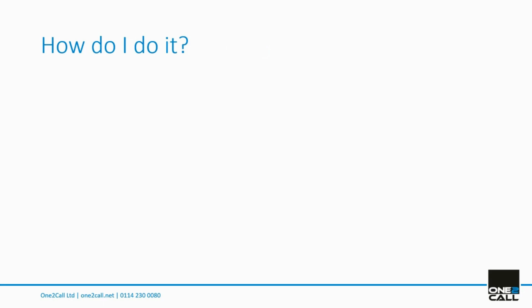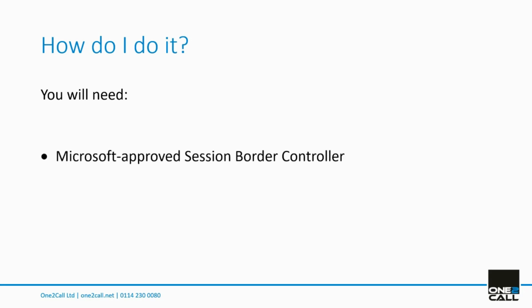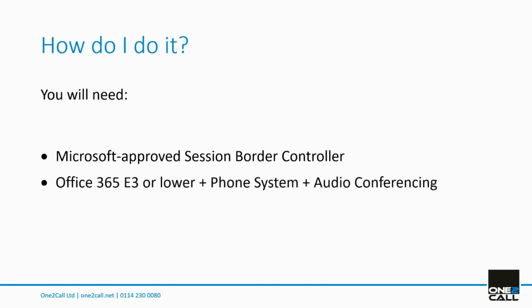So how do I do it? To enable direct routing with your Microsoft Teams, you will need a Microsoft approved session border controller. For Office 365 E3 licenses or lower, you will need the phone system add-on license and also the audio conferencing add-on license if you wish to allow external parties to call into your audio conferences, which most people will. Or alternatively, Office 365 E5 license and above, which has phone system and audio conferencing bundled in.